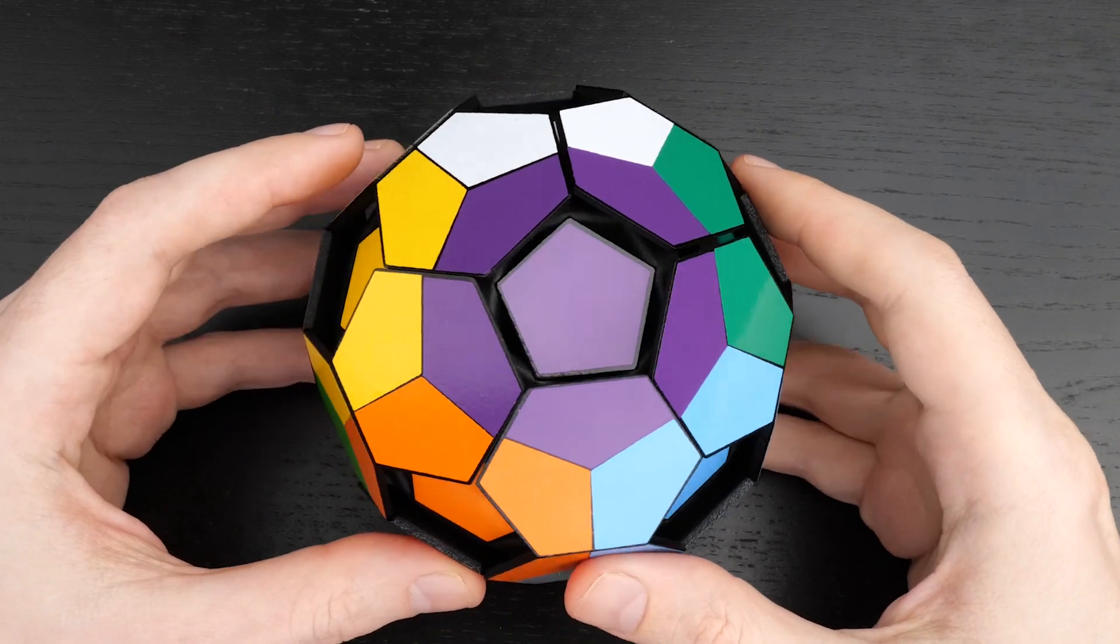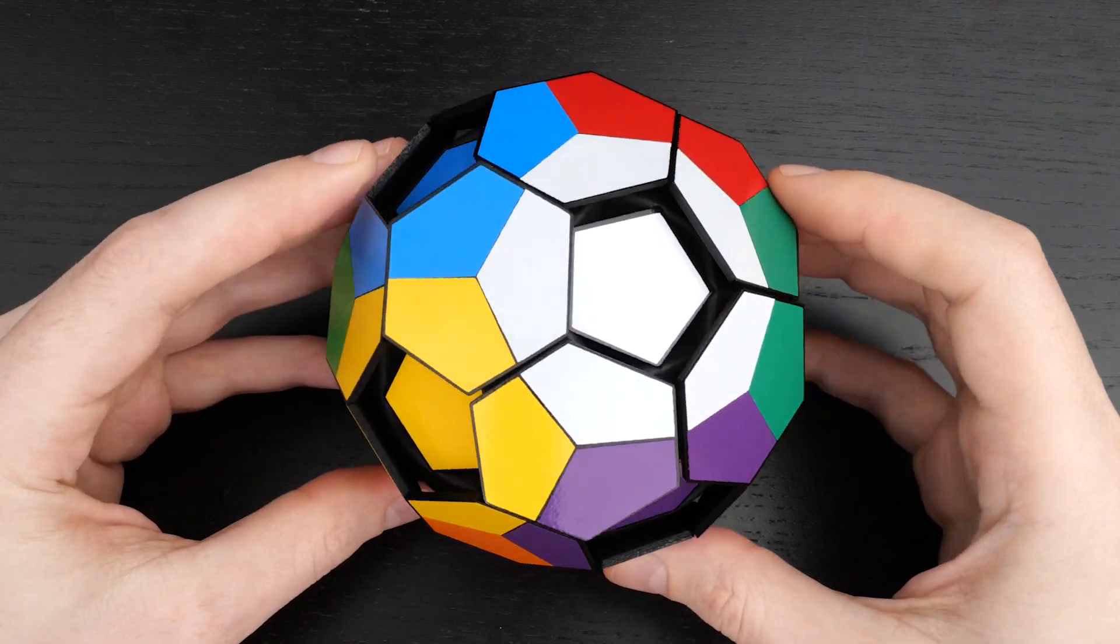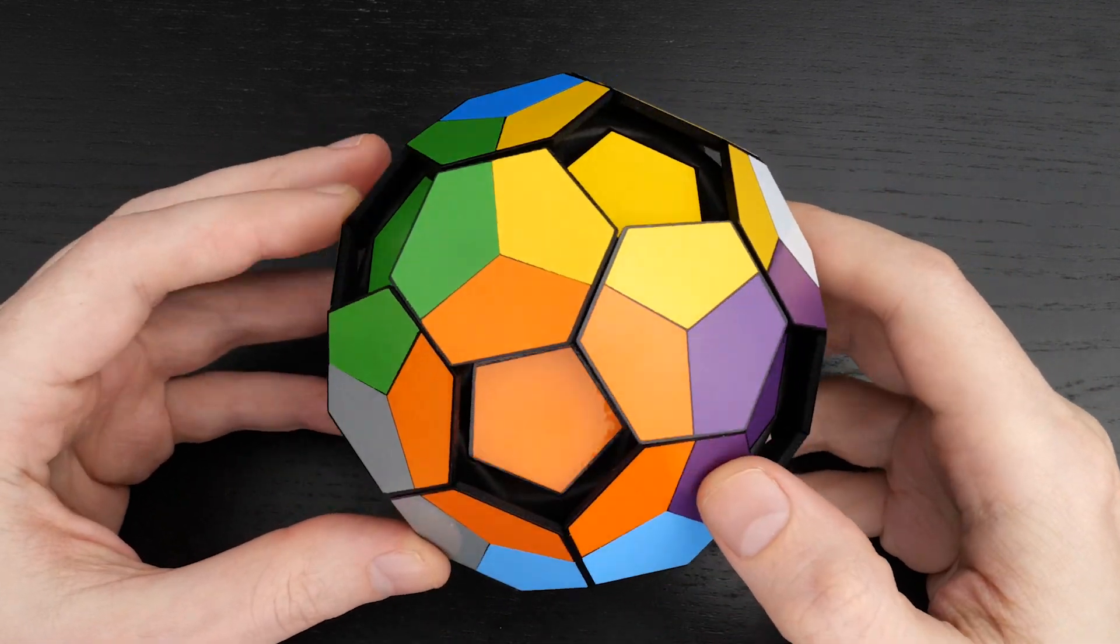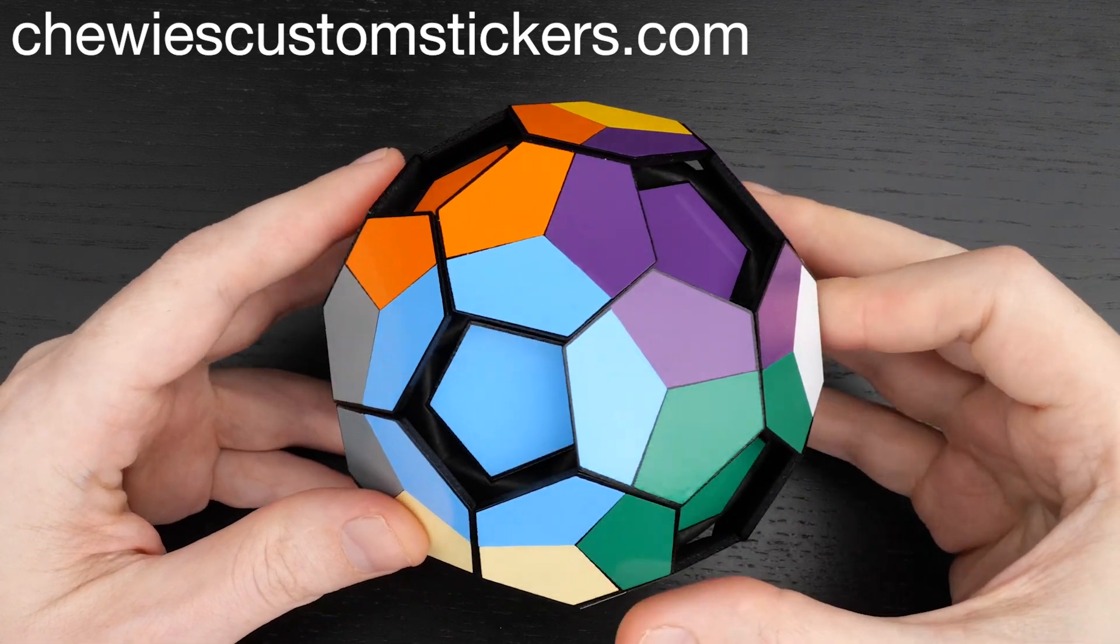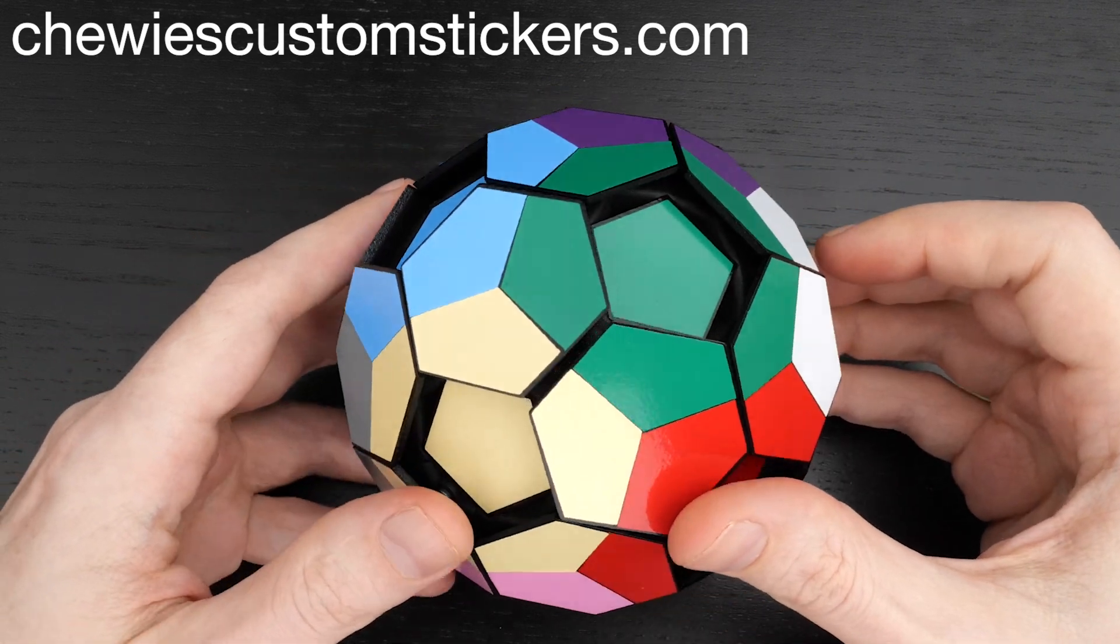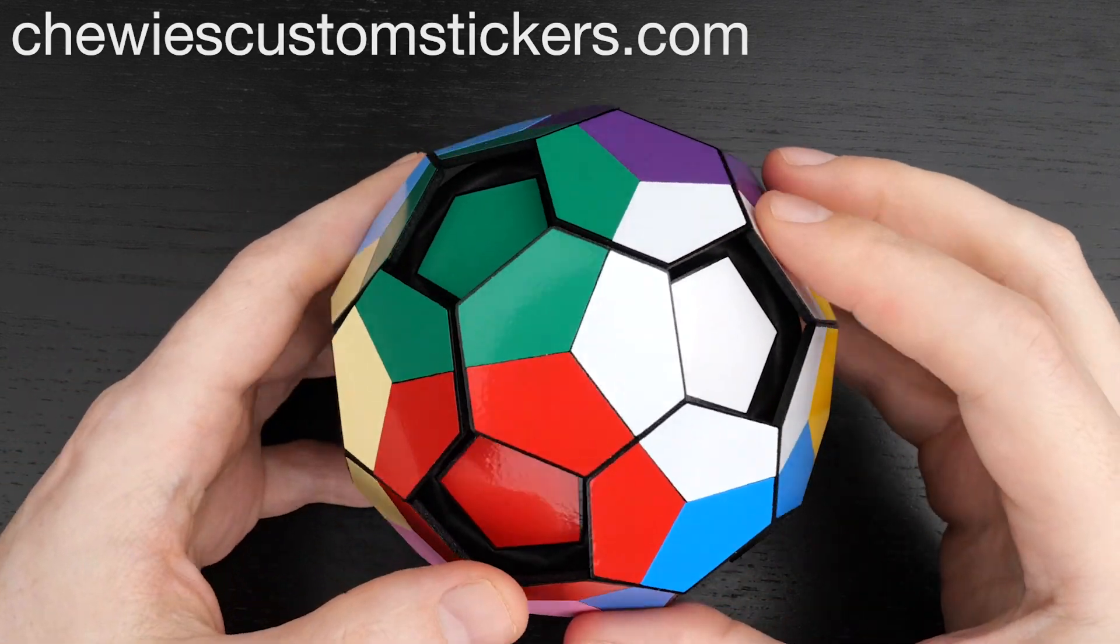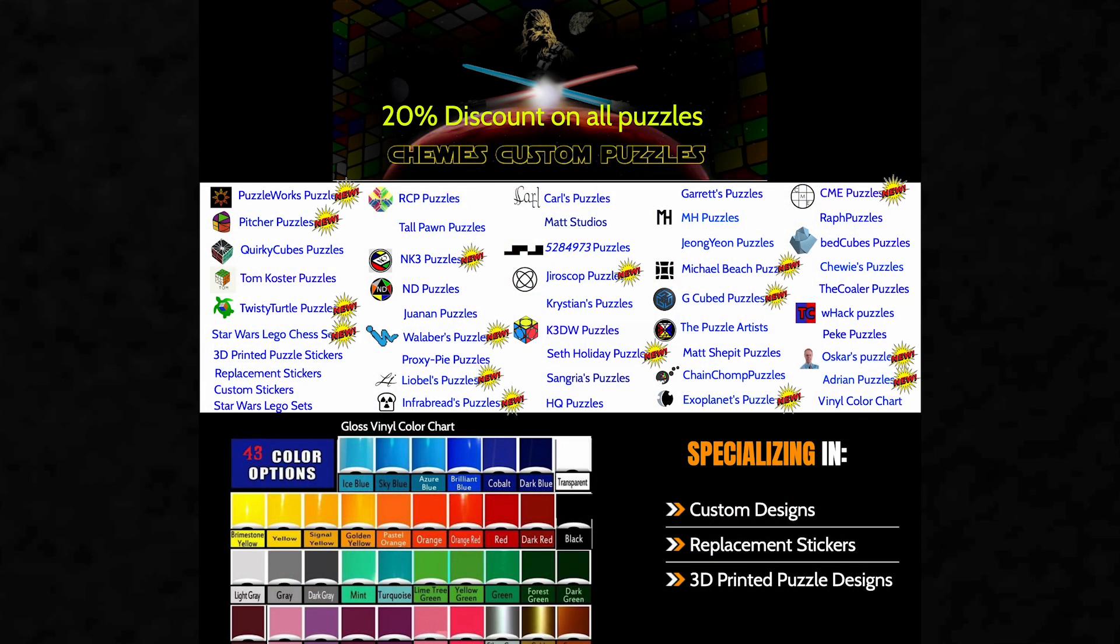The Rubik's Cube style version is somewhat less expensive, although it still requires some post-processing. I got the stickers made by Chewy's Custom Stickers. If you're interested in buying the pieces of this version and making one yourself, you can contact Chewy for the stickers. Link in the description. His service and stickers are as awesome as his website.